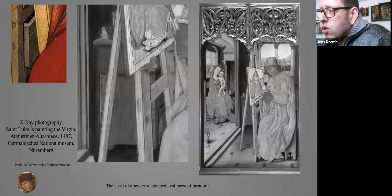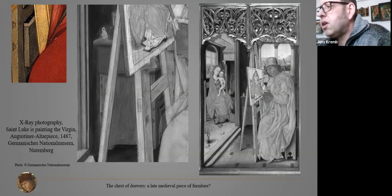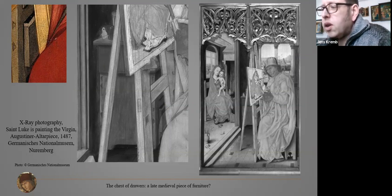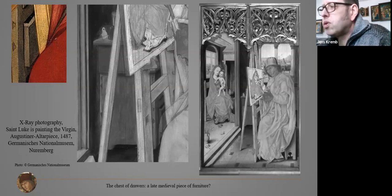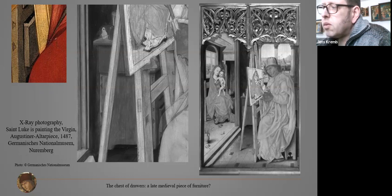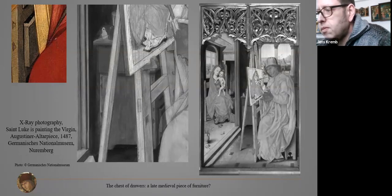When I started my research and showed this depiction to some furniture experts, one comment was that the chest of drawers may have been added later. This assumption can be denied by two facts. First, it would have been very difficult to add this furniture behind the easel later in time. Second, the X-ray photography shows that the furniture is part of the original color layer. Furthermore, the X-ray shows that the painter's primary intention was to draw the garment of Saint Luke a bit bigger, but during the painting process he recognized the open drawer would have been covered, and he decided to shorten the garment so the open drawer could be seen — an indication he wanted to show it explicitly.